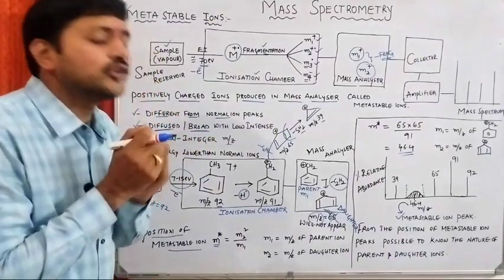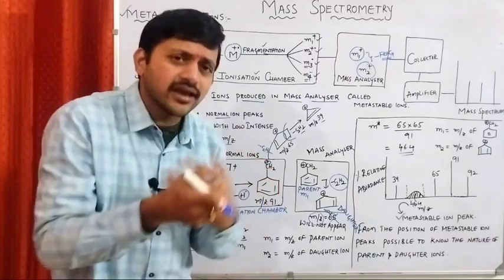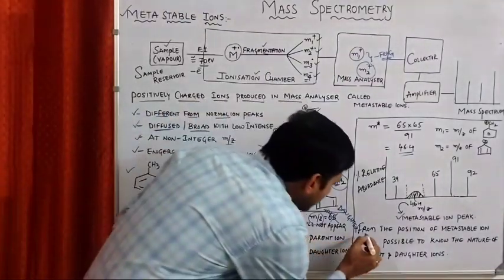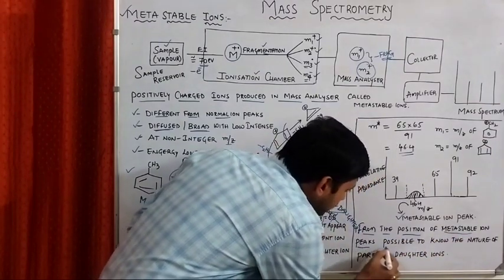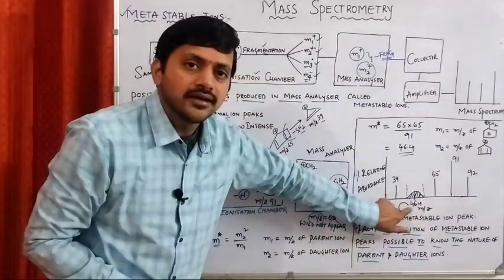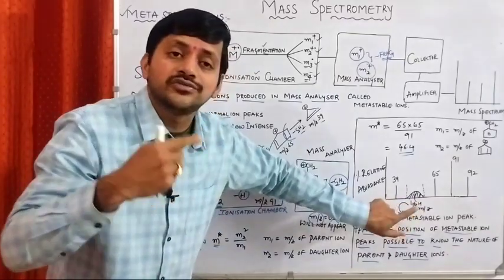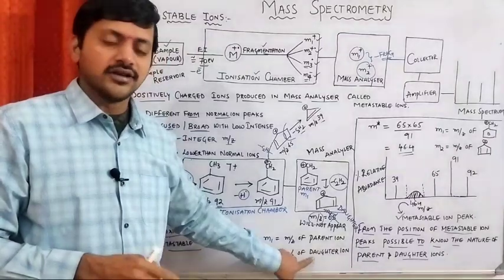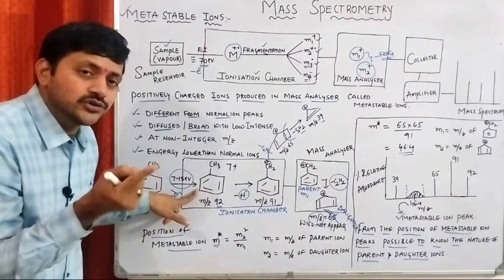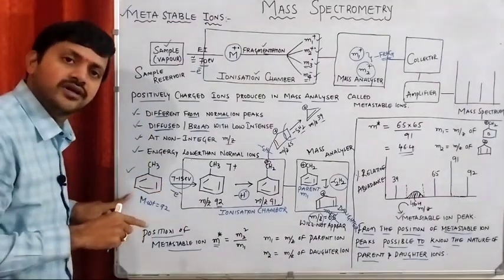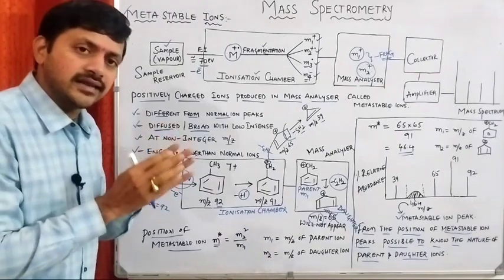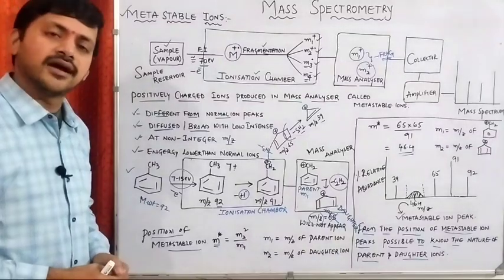The importance of metastable ions: from the position of metastable ion peaks, it is possible to know the nature of the parent and daughter ions. Based on the position of metastable ions, we identify the nature of the parent ion and daughter ion, which tells us the nature of the molecular ion, and thereby the nature of the sample. Metastable ions are a very important concept in mass spectrometry.